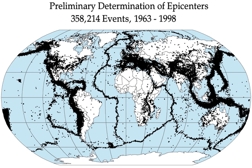Although relatively slow seismic waves have traditionally been used to detect earthquakes, scientists realized in 2016 that gravitational measurements could provide instantaneous detection of earthquakes, and confirmed this by analyzing gravitational records associated with the 2011 Tohoku-Oki earthquake.